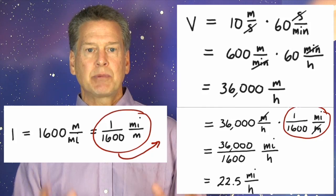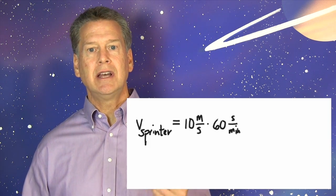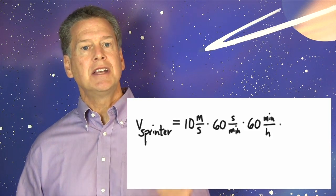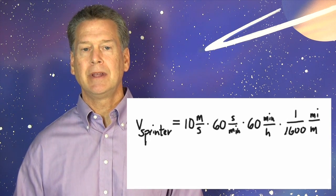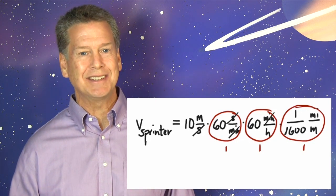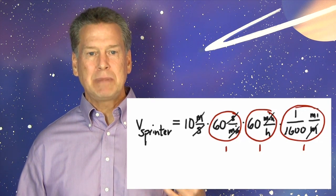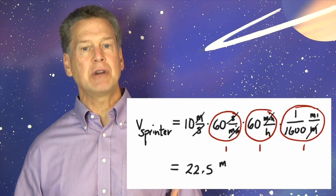Let's see the whole process expressed in a single line of algebra. V sub sprinter equals 10 meters per second times 60 seconds per minute times 60 minutes per hour times 1 over 1,600 miles per meter. That's a lot of multiplying by 1. And look at how those units cancel. The speed of a sprinter is 22.5 miles per hour.